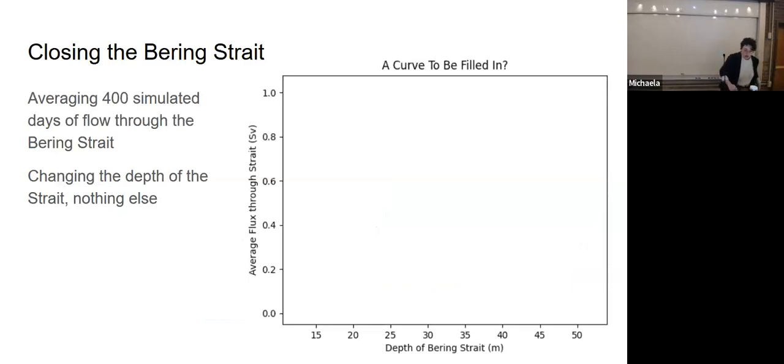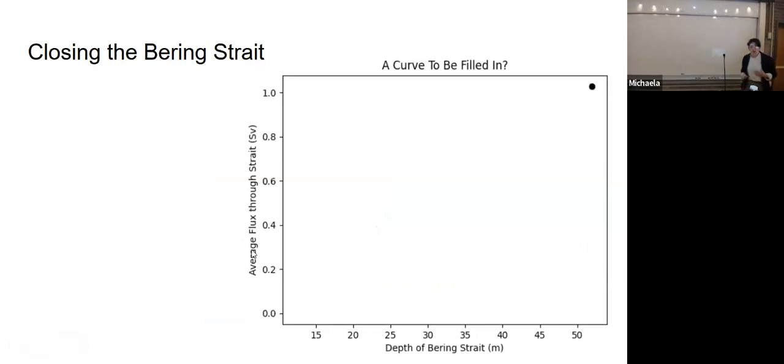Here are some results. What I am about to show you, this is 400 simulated days average. We're changing the depth of the strait. We're not changing anything else. Here, this is how deep the strait is. Here, this is how much water is getting through. We start with a fully open Bering strait. We get about a sverdrup of water going through it. Great. Looks like reality.